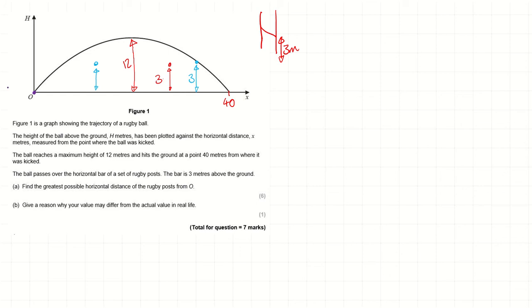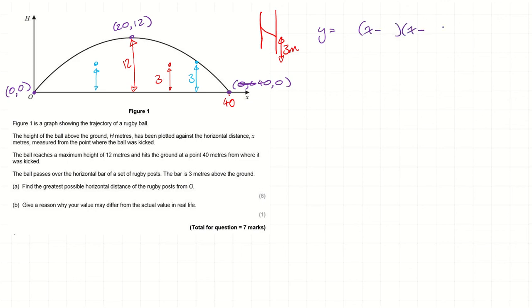I'm going to label on some coordinates that I know the curve goes through. It definitely goes through (0, 0). It goes through (40, 0) — 40 along and zero up. And it goes through (20, 12) — the maximum height is going to be exactly halfway between the roots because of the symmetry of quadratics, so that's 20 along and 12 up. I can use those three coordinates to find my equation, especially since two of them are on the axes. The equation of a quadratic written in factored form has the roots in the brackets, so I can plug those in straightaway — the roots are zero and 40.